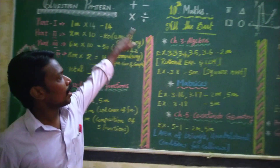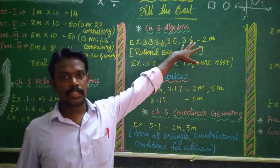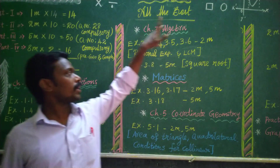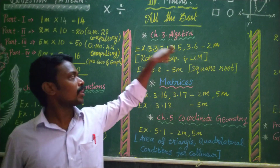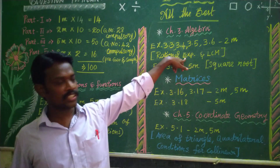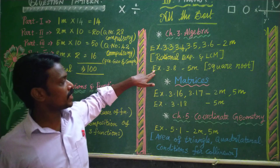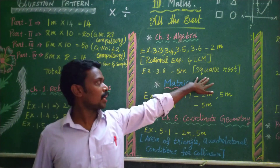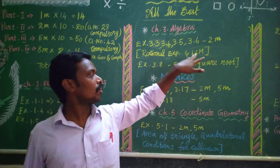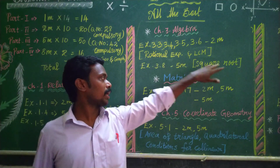This is the algebra section. Exercises 3.3, 3.4, 3.5, and 3.6 — these are 2-mark questions, expect 1 or 2 maximum. What type of questions are there? LCMs and rational expressions reduced to lowest form, addition, subtraction and multiplication. This is the most important area and it is easy. Exercise 3.8 — square root — this is the most important area with a 95% chance of appearing. Find the unknown values, find the value of M — this has maximum chance.